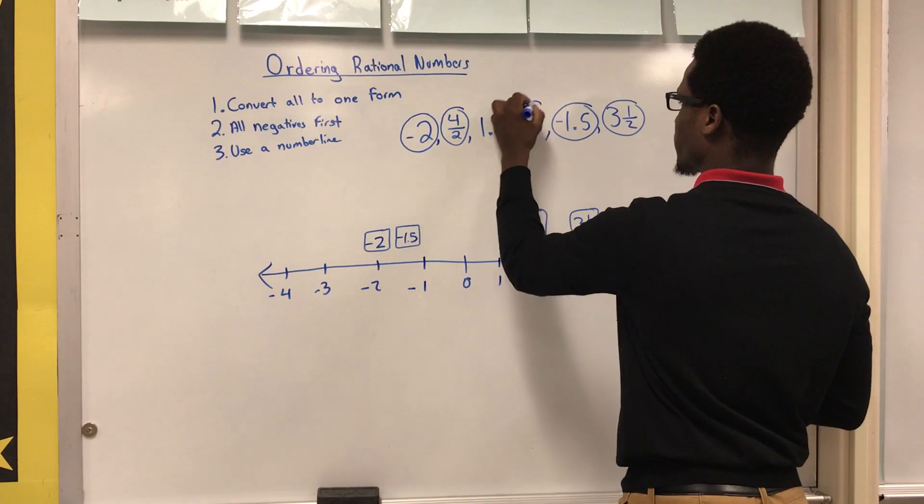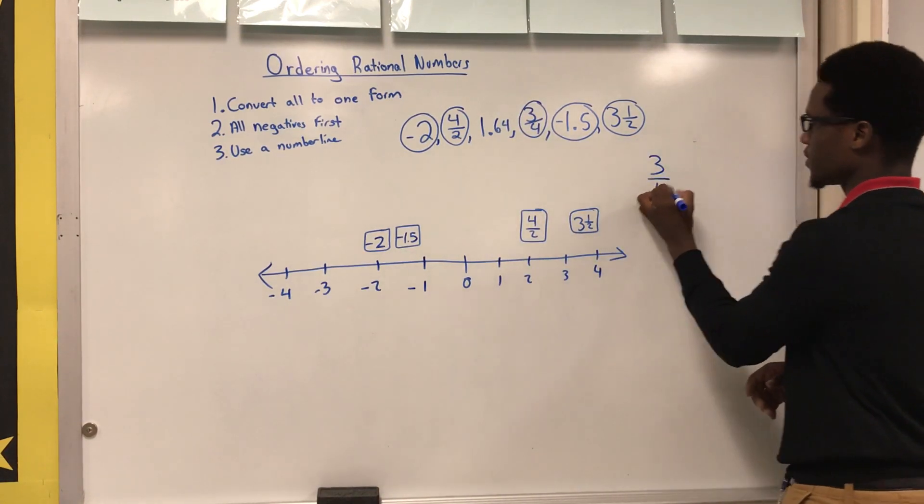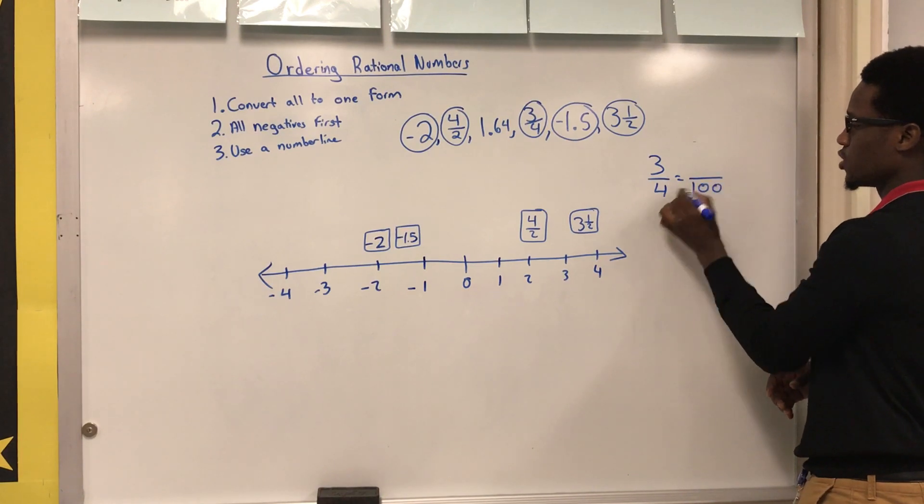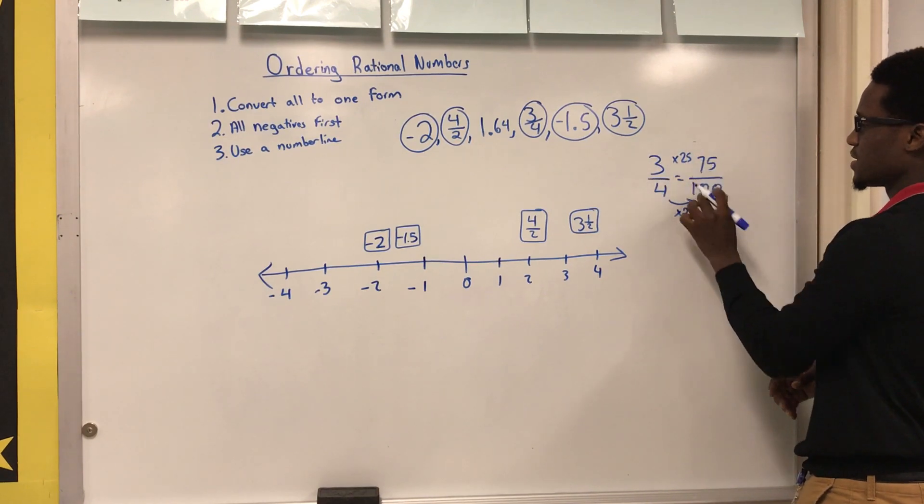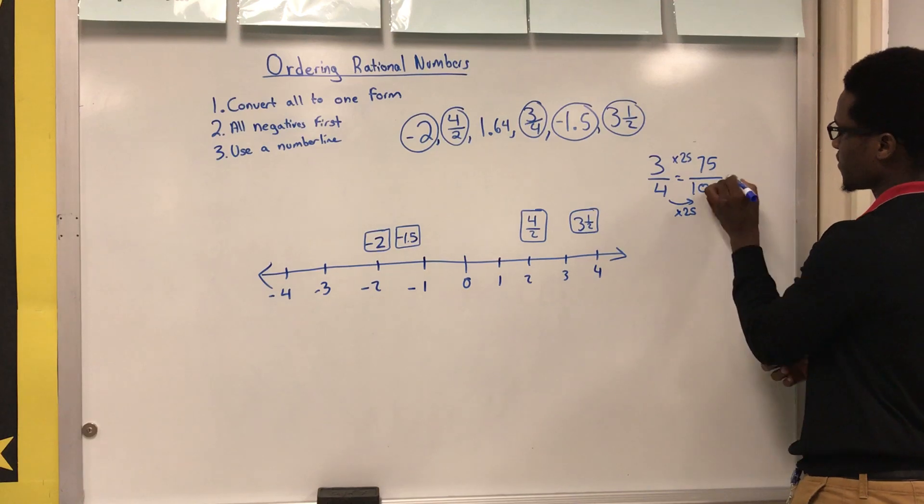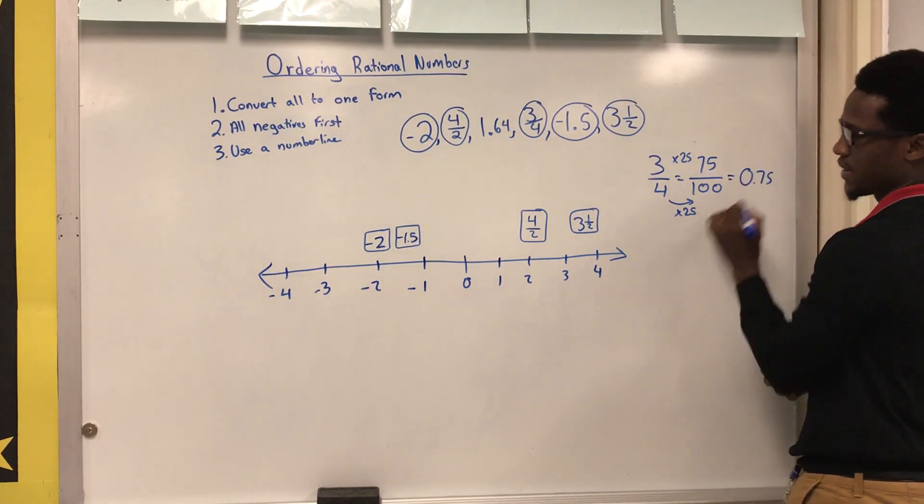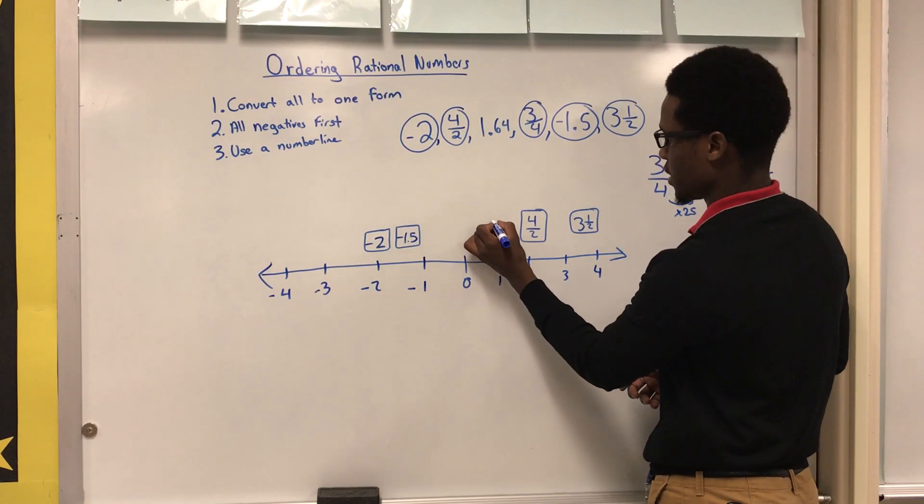So next is going to be three fourths. Now if you don't know what three fourths is, you could go ahead and create an equivalent expression. I know that four is going to go evenly into a hundred, 25 times. So it's going to be seventy-five hundredths. All right, so if you think about seventy-five hundredths, that's 0.75. 0.75 is around right here, so we're going to go ahead and put the three fourths here.